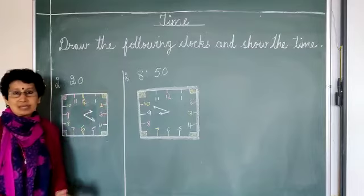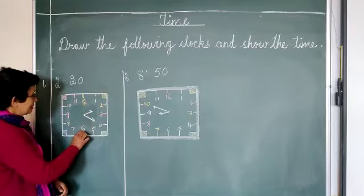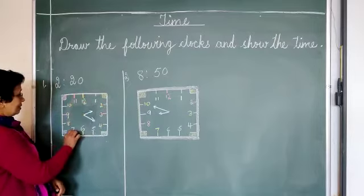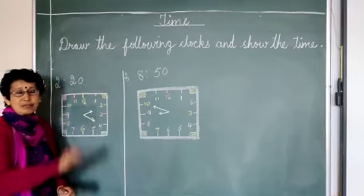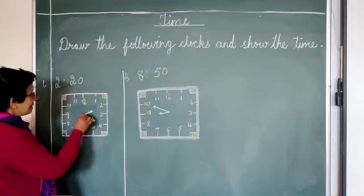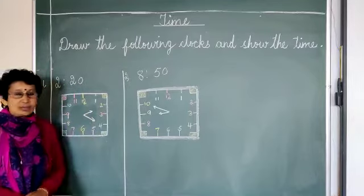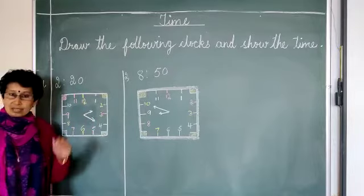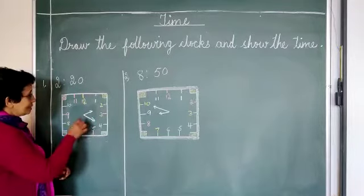all the numbers should be facing each other. 12 and 6, 9 and 3, 11 and 7, 8 and 4 - like this, they should be facing each other. And at the center of the clock, you have to make a point. From there, we will start the needles. One is the shorter hand and another one is the longer hand.